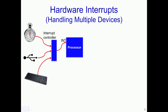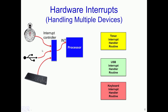The processor communicates with the interrupt controller to determine which device had actually generated the interrupt and, as a result, executes the corresponding interrupt handler routine. For instance, if the timer generated the interrupt, the timer interrupt handler routine would be invoked; if a USB device generated the interrupt, the USB interrupt handler routine would be invoked. Thus, the interrupt handler routine invoked is very specific to the device that caused the interrupt.